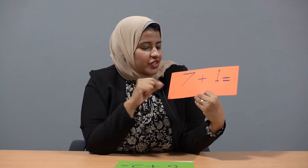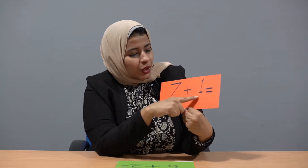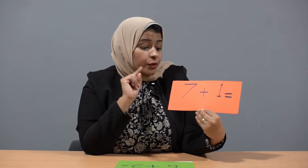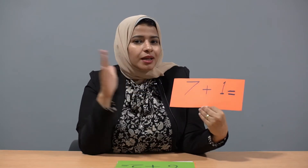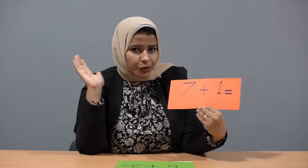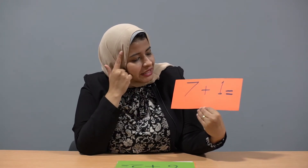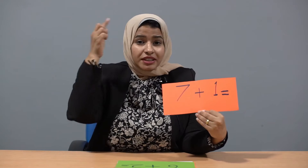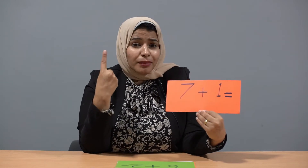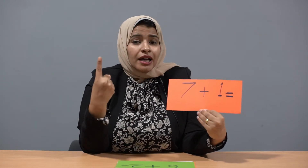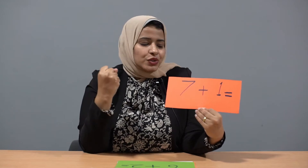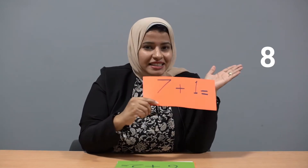Let's read this equation: seven plus one equals. When I see plus, I will search for the bigger number. So which is the bigger number here? Seven. So I will put seven in my mind and one in my hand. Count after seven — eight. So the answer is eight.